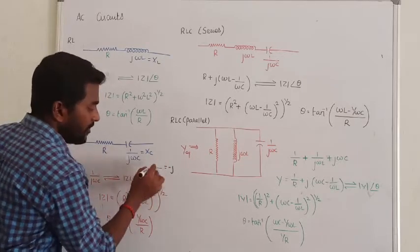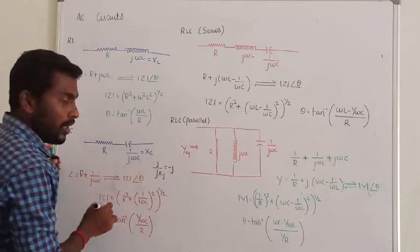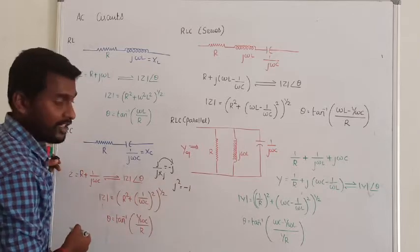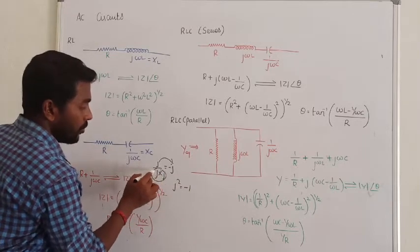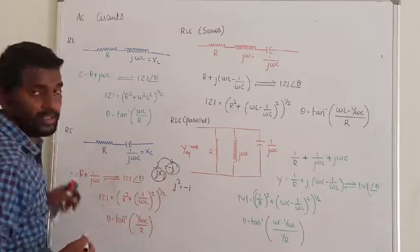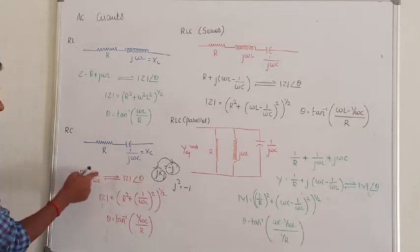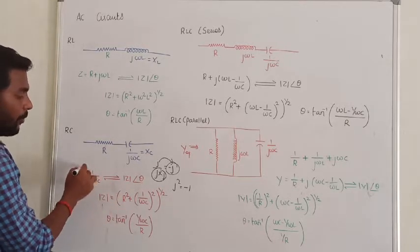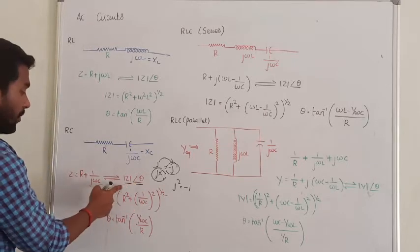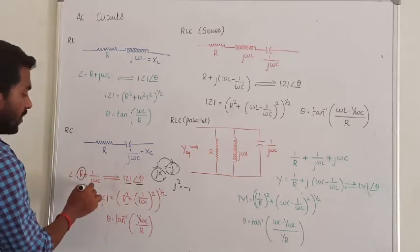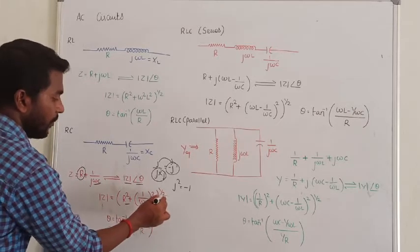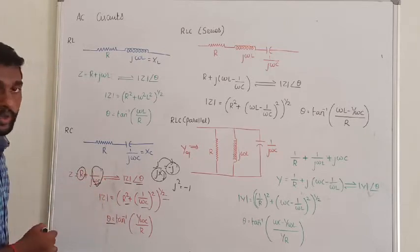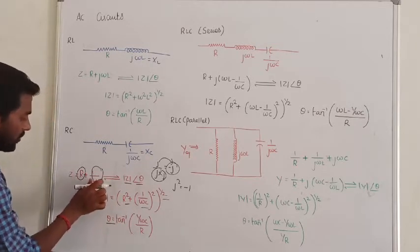What do we mean by 1/j? Multiplying j by j gives j squared, and j squared equals minus one. So j divided by minus one is nothing but minus j. Therefore 1/j equals minus j, and the impedance of the capacitor becomes minus j/ωC. This is the rectangular form: R minus j/ωC. Following the formula, mod Z at angle theta equals the square root of R squared plus (1/ωC) squared, and the phase angle theta equals the arctangent of the imaginary part divided by the real part.